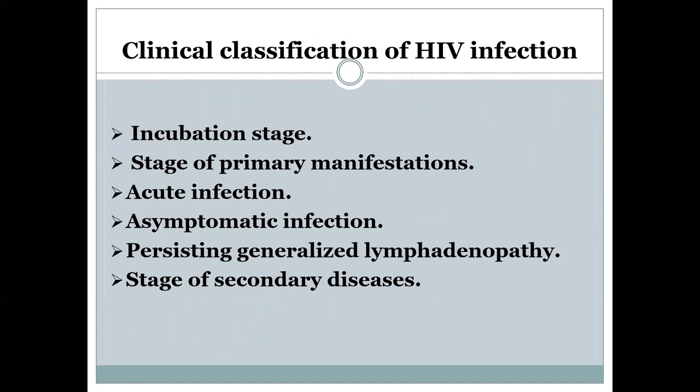The clinical classification of HIV infection includes the incubation stage — when the person has no clinical symptoms and no complications. Next is the stage of primary manifestation when the person feels the first complications, followed by the stage of acute infection and asymptomatic infection. After that comes the stage of persistent generalized lymphadenopathy, and finally the stage of secondary disease which appears as a result of HIV infection.